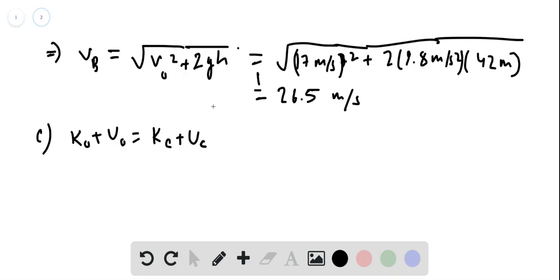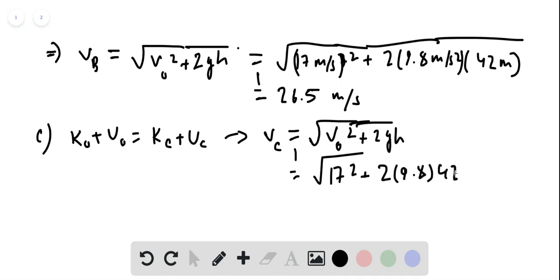and so essentially replicating this, you get pretty much the same thing, except Vc is equal to V-naught squared plus two times G-h here, because of that factor of half going away. So this is the square root of 17 squared, plus two times 9.8 times 42, giving you velocity at C of 33.4 meters per second.